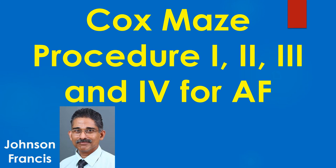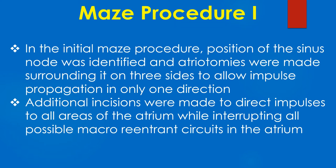Surgical procedures for atrial fibrillation are called Cox-Maze procedures, in recognition of the pioneering work done by Cox and colleagues. Initial work on AF from this group was left atrial isolation. Though this produced sinus rhythm in the right atrium, the left atrium continued to fibrillate and was a source for thromboembolism.